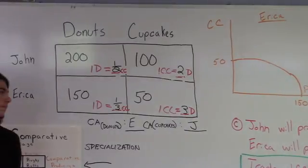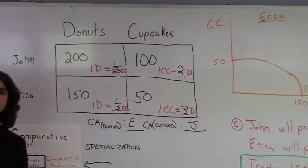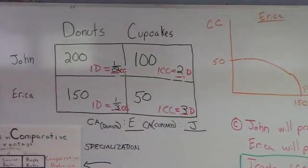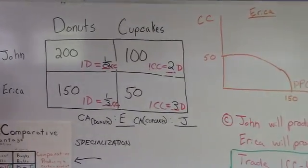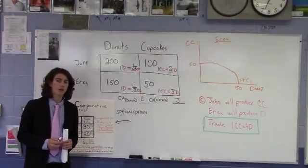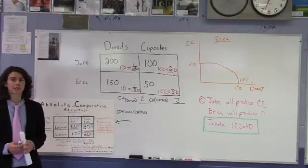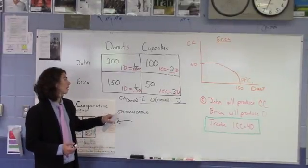And part two of question C is, indicate whether or not specialization and trade are beneficial to Erica. So, on the other hand, Erica will not benefit, because her opportunity cost of not producing one cupcake is three donuts. But now, through specialization and trade, she will have to pay four donuts for one cupcake instead of three.